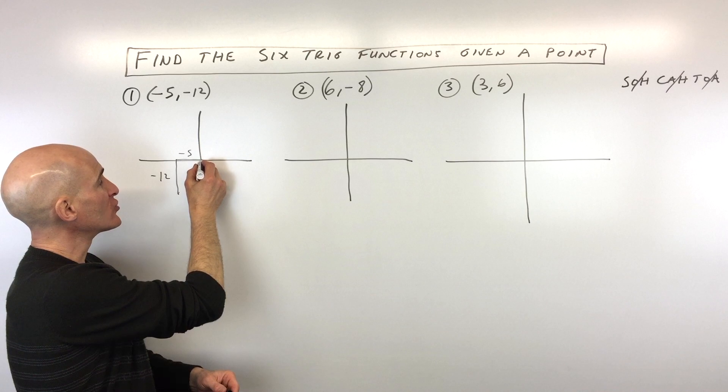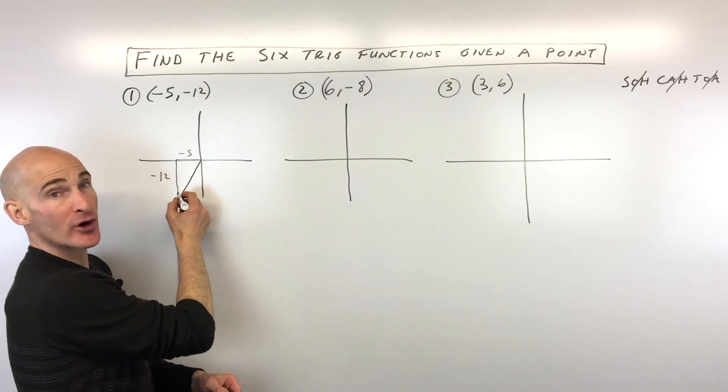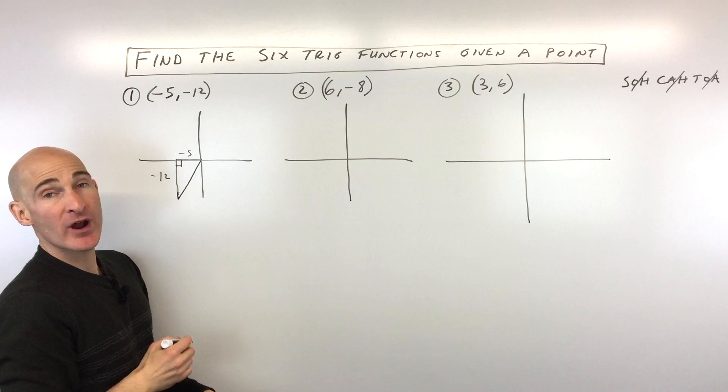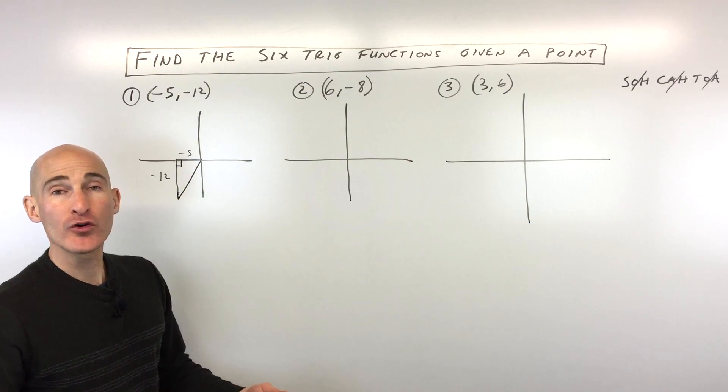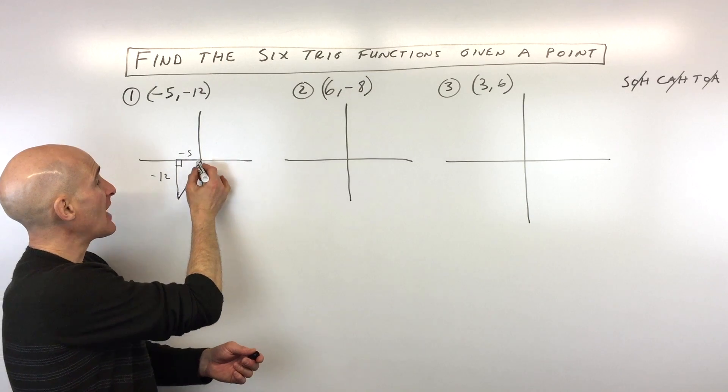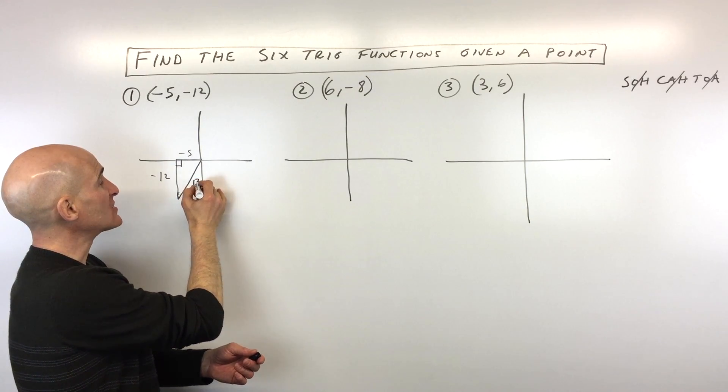Then what you're going to do is draw a ray to that point from the origin. You can see this is making a right triangle. Then what you can do is use the Pythagorean theorem, or if you know your Pythagorean triples, you can find this missing side here. And in this case, it's 13.